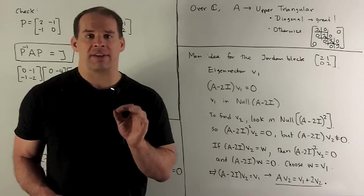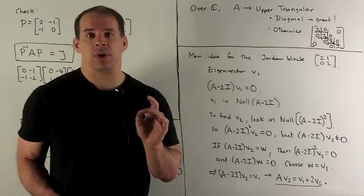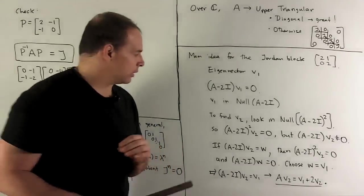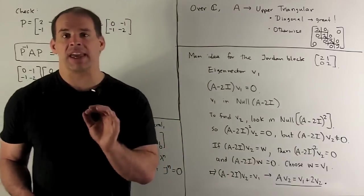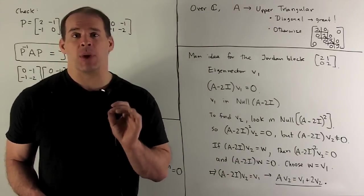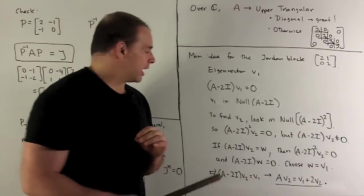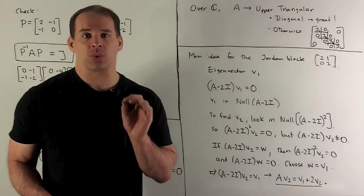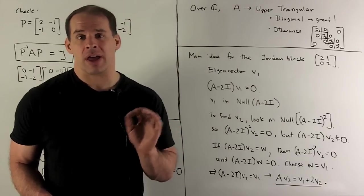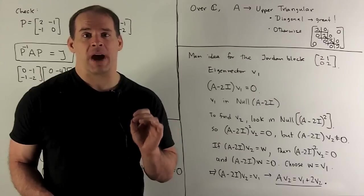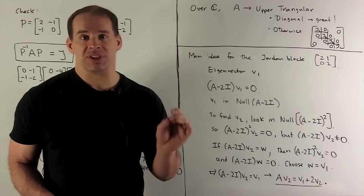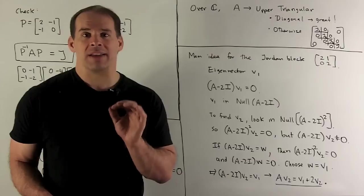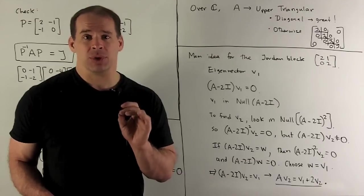So, that's going to mean I'm going to have to find a W, which is non-zero, so that (A - 2I)V2 = W. If that's the case, we apply (A - 2I) to both sides. On the left-hand side, we're going to get 0. (A - 2I)² of anything is 0. On the other side, I have (A - 2I)W, so that's going to be equal to 0, which means W is an eigenvector. We might as well let W be equal to V1.